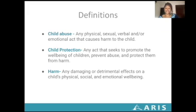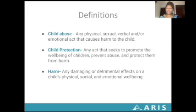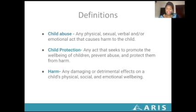There are indicators for each type of abuse, which we do discuss with our learners. Child protection is an act that seeks to promote the well-being of children and to prevent abuse and protect them from harm. This is our whole ethos about ARIS child protection — how are we seeking to promote well-being? Child protection is really a key aspect of well-being at ARIS. Harm is any damaging or detrimental effects on a child's physical, social, and emotional well-being. That is why child abuse has those different domains — physical, sexual, and emotional — because harm considers how damaging and detrimental effects are on the child's physical, social and emotional well-being.